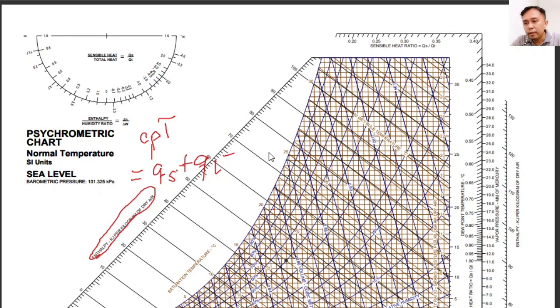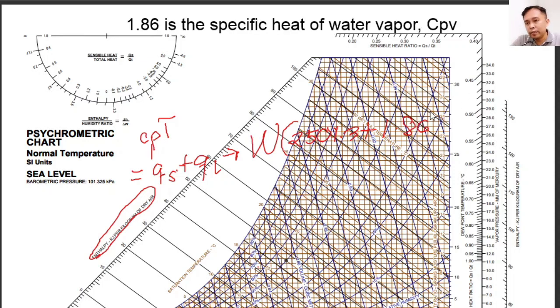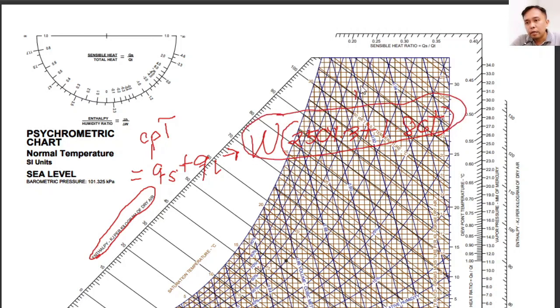While the Ql has this value to be determined from the formula: humidity ratio times 2501.3 plus 1.86, which is the Cp of water, times T, which is the dry bulb temperature for your latent heat.